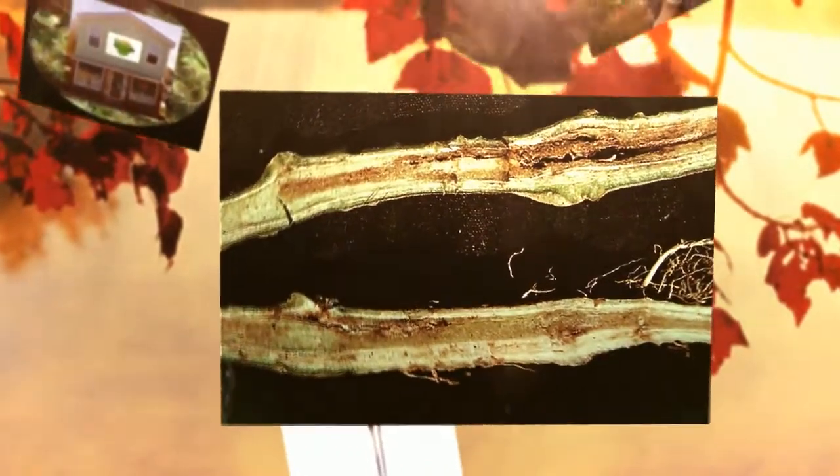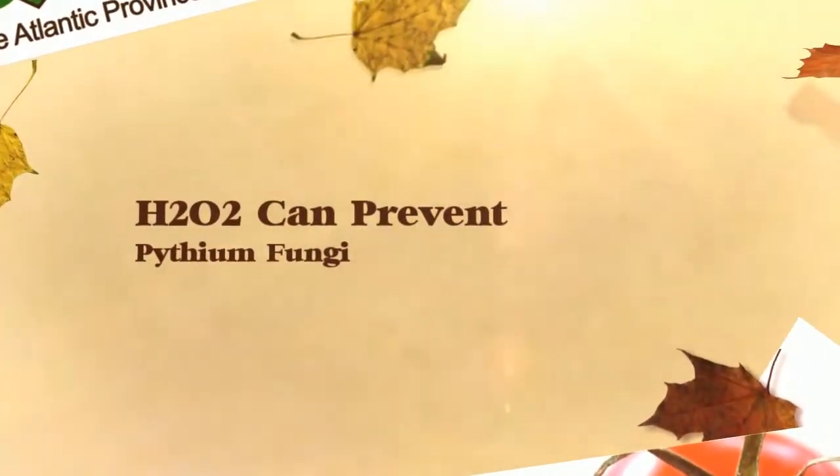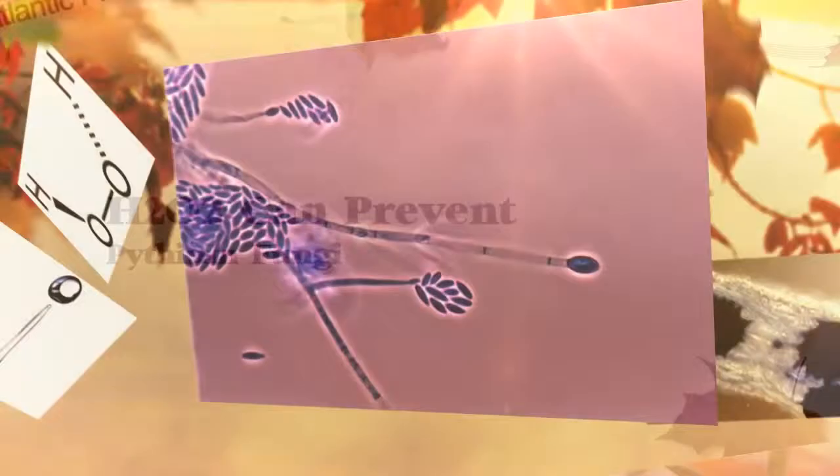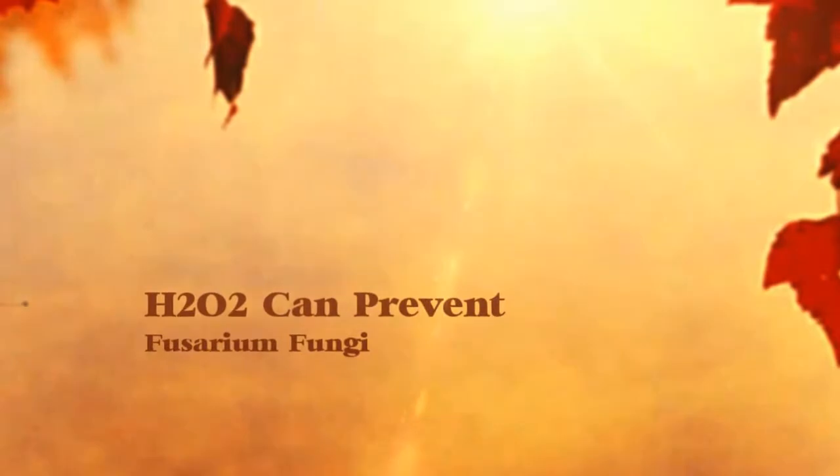The free oxygen that hydrogen peroxide releases is great for killing many different disease-causing organisms, eliminating infections that already exist, and preventing future infections. Bacterial wilt, fusarium fungi, and pythium fungi can all be prevented by proper use of hydrogen peroxide.